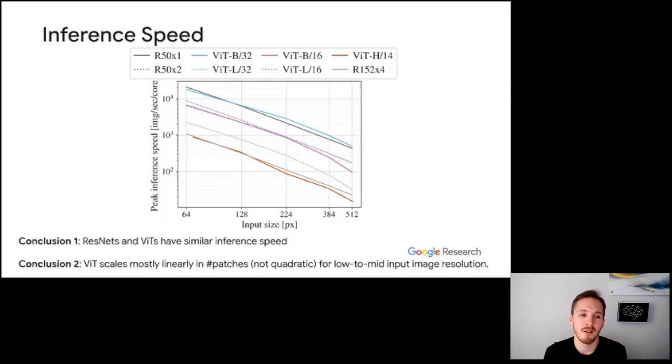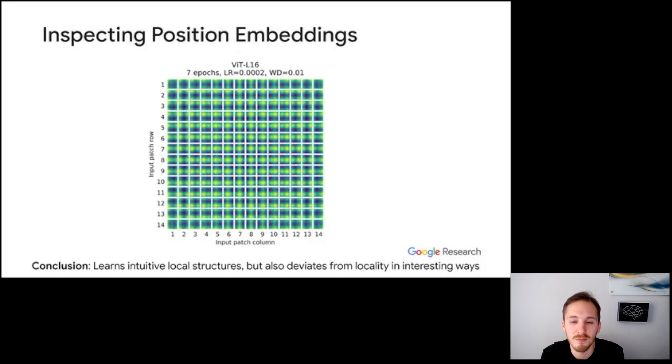All right, now let's compare the inference speed of ViT and ResNet. The x-axis here is the input image resolution from 64x64 to 512x512. The y-axis is the inference speed in images per second per TPU core. There are two main observations here. First, ResNet and ViTs have similar inference speed in general. For instance, the two fastest models, ResNet50 and ViT-B/32, are very close. The two slowest models, ResNet-152x4 and ViT-H/14, are very close too. The second observation is that the inference speed of ViT mainly scales linearly with the input resolution. And only for models with smaller 16x16 patches and large image resolutions, the quadratic cost of self-attention starts kicking in.